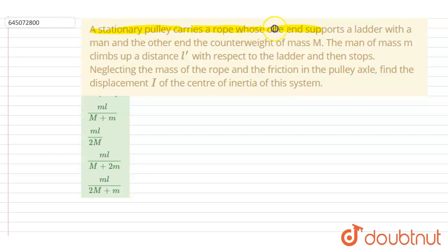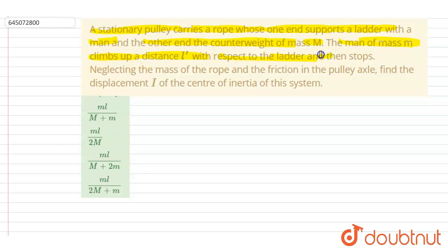Hello everyone. A stationary pulley carries a rope whose one end supports a ladder with mass M, and the other end a counterweight of mass M. A man of mass m climbs a distance l with respect to the ladder, then stops. Neglecting the mass of the rope and friction in the pulley, find the displacement of the center of inertia of this system.